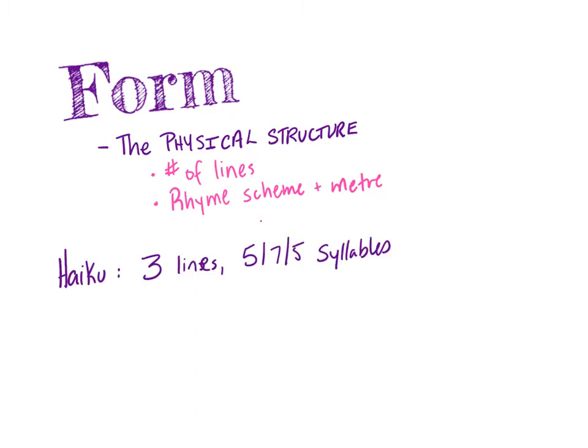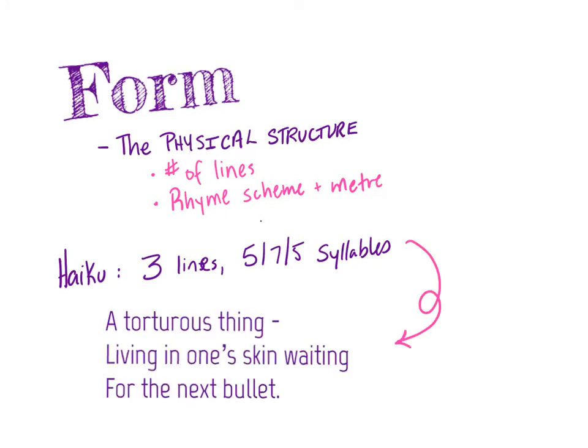A haiku, for example, is a three-line poem where the first and last lines are made up of five syllables, and the middle line is made up of seven syllables. A haiku doesn't have to have a specific meter or rhythm.